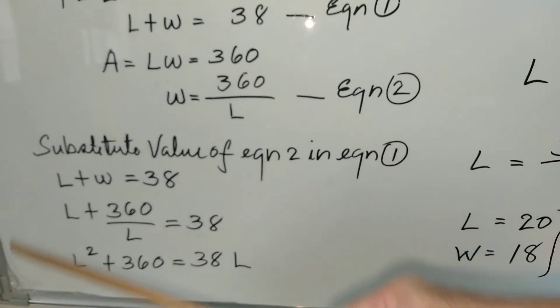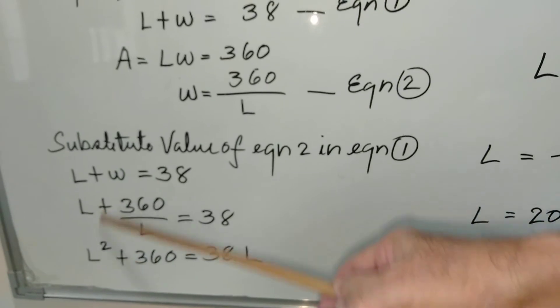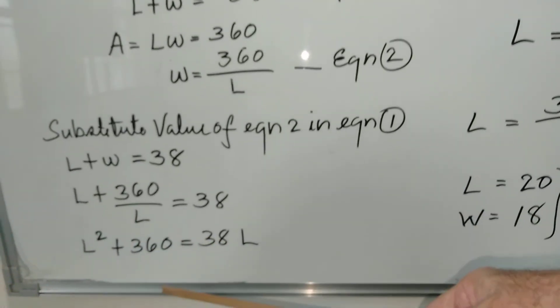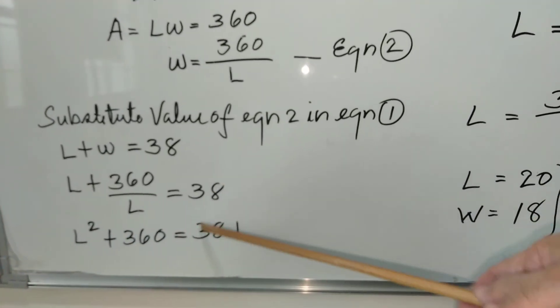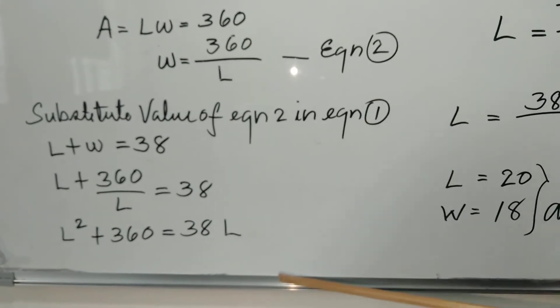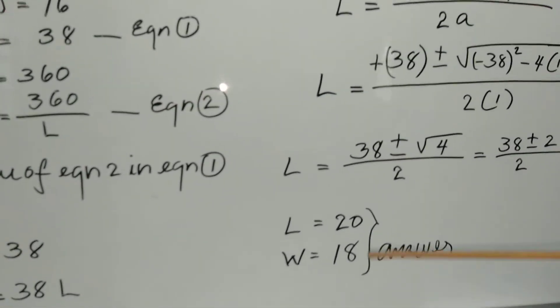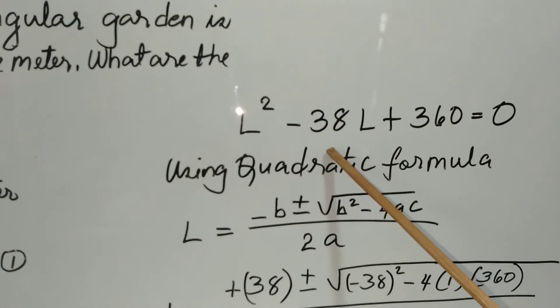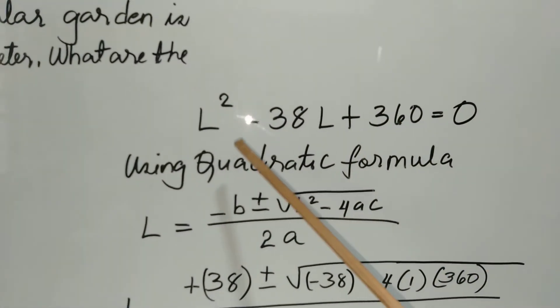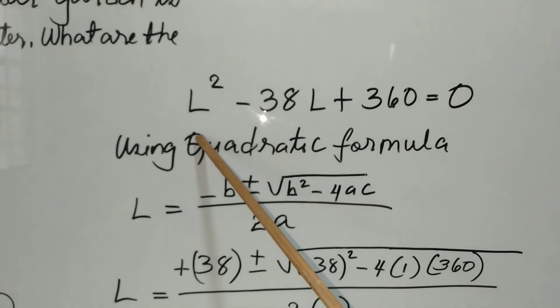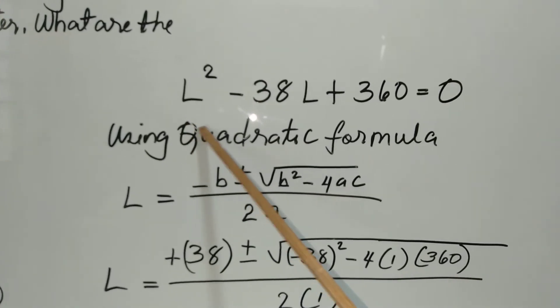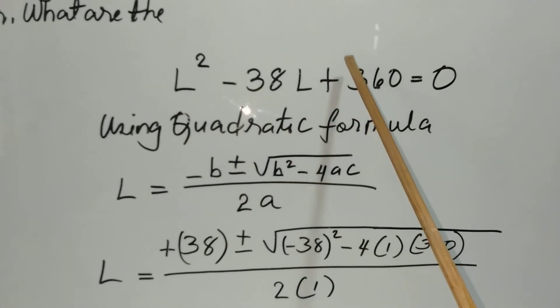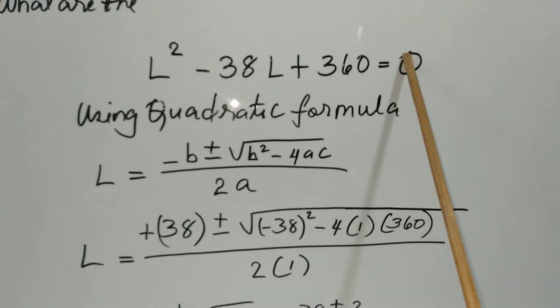We multiply the whole equation by L. So this one becomes L squared, this one is 360, and this one is 38L. To continue, we transpose negative 38L to the left side, so it becomes L squared minus 38L plus 360 equals 0.